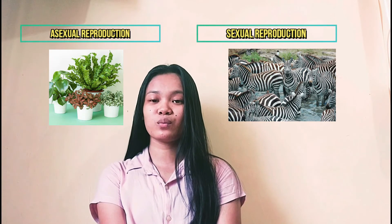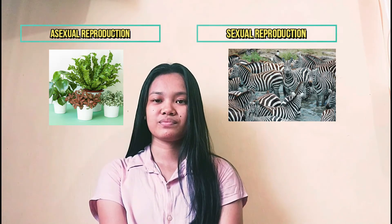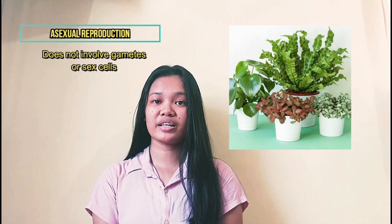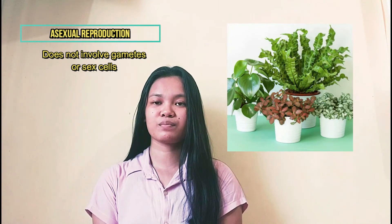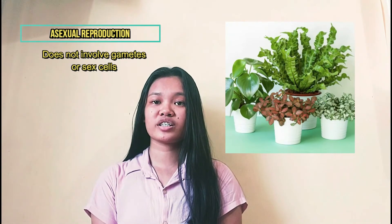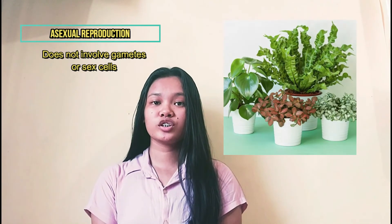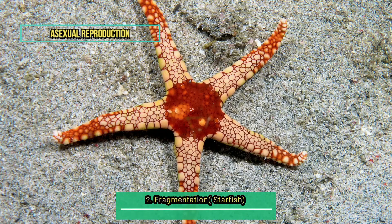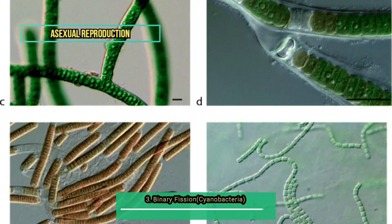Asexual reproduction, by definition, does not involve gametes or sex cells, which can be observed in some plants and the lower forms of animals. Examples include: budding, which occurs in organisms like hydra; fragmentation, which occurs in organisms like starfish; binary fission, which occurs in organisms like cyanobacteria.